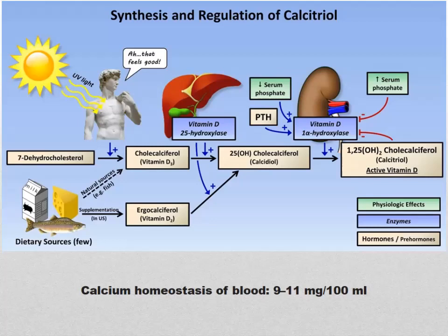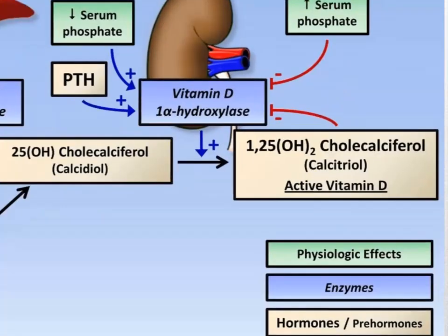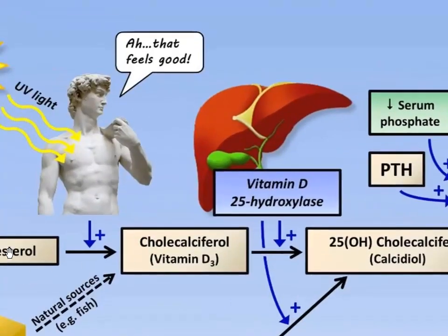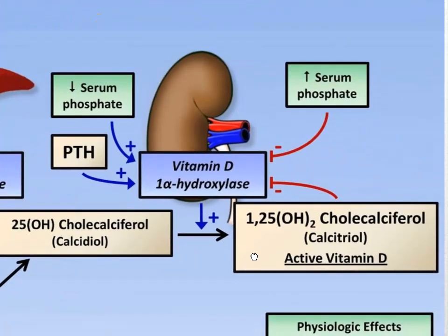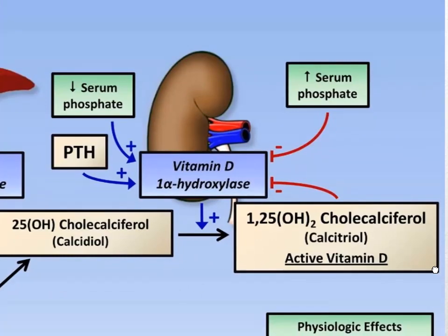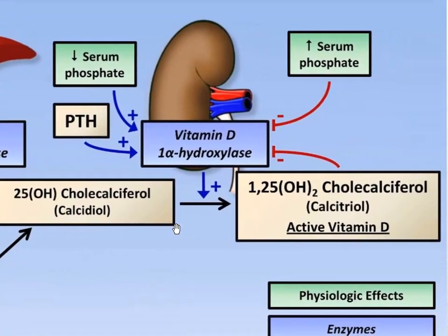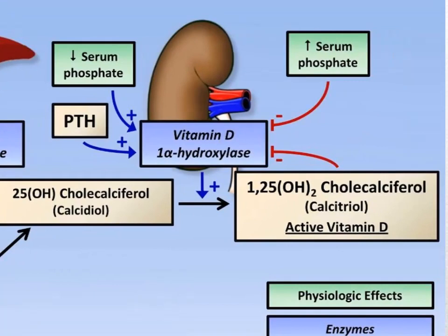UV light makes a reaction in our skin that causes the liver and kidney to produce activated vitamin D — calcitriol. So yes, sunlight helps us make vitamin D in our body. Vitamin D is necessary for your body to absorb calcium — that's why this is so important as one of the three main players in our hormonal mechanisms for bone remodeling.